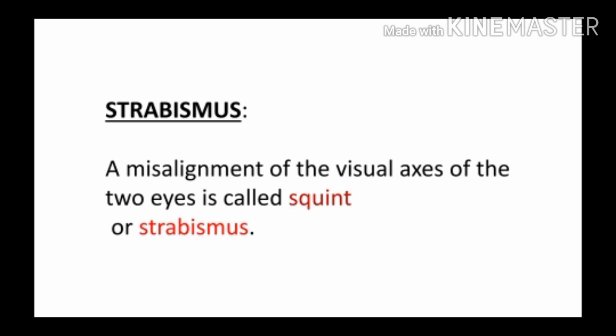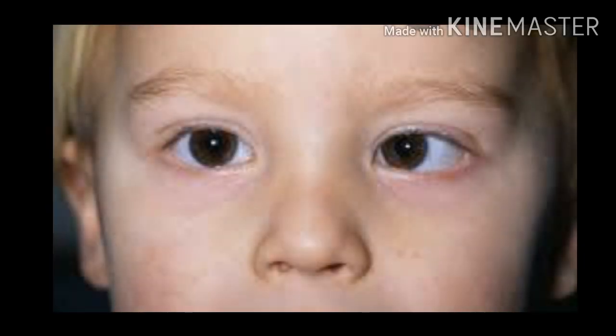Strabismus: a misalignment of the visual axis of the two eyes is called squint or strabismus. Squint is an abnormal condition of the eye in which both eyes cannot focus on a single object simultaneously. As you can see in this picture, the child's right eye is normal but his left eye is slightly deviated on the nasal side — this is a squint.